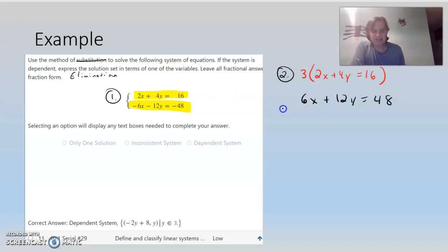And then if I take the other equation and add to it the negative 6X minus 12Y equals negative 48. Add them together, I get 0 equals 0. So there's nowhere else to go.